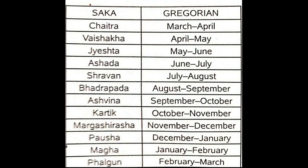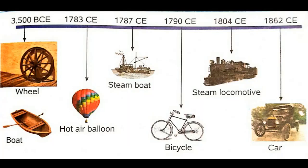Ogran — November to December. Posh — December to January. Magh — January to February. Falgun — February to March. A timeline displays events in the order in which they took place.